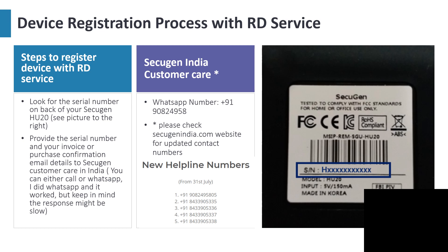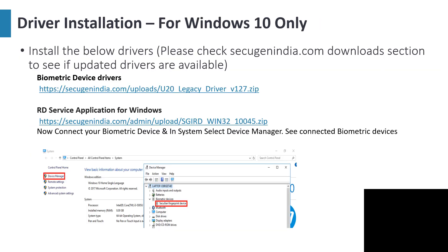Once you provide it to them, they will register your specific serial number device with the RD service. You will have to pay some minimal charges — I paid around six or seven to eight dollars to register. This could vary from vendor to vendor and device to device.